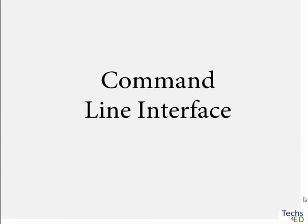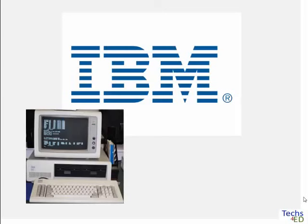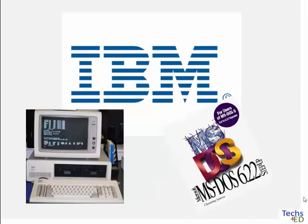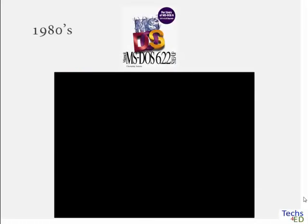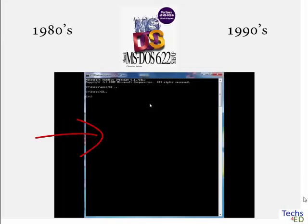So, what is a command line interface? In the 1980s, the company IBM, or International Business Machines Corporation, which manufactures and markets computer hardware and software, produced computers with disk operating system, or DOS. DOS was the first widely used operating system between the 80s and the 90s. To communicate with a computer with DOS, an example of a command line interface, the user types in commands. To be proficient in a computer with DOS as an operating system, the user has to memorize the commands to communicate.